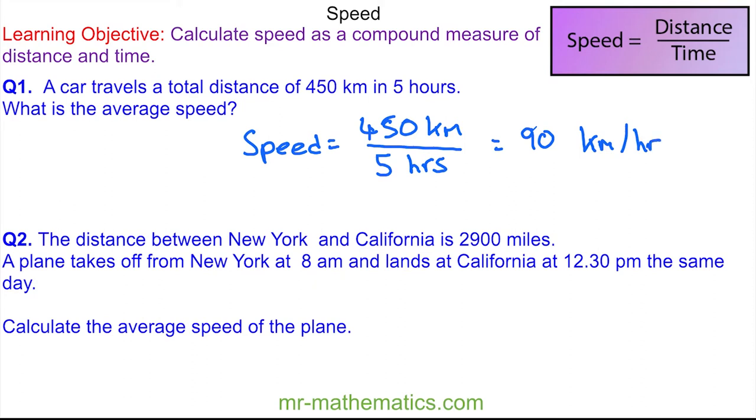In question two, the distance between New York and California is 2900 miles. A plane takes off from New York at 8 am and lands at California at 12:30 pm the same day, and we're asked to calculate the average speed of the plane.